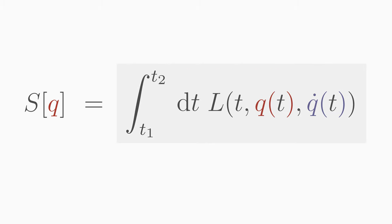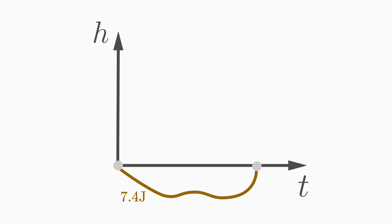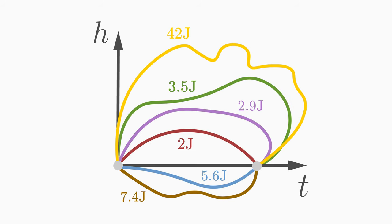Of course, it is totally cumbersome to calculate the integral for all possible paths to take the path that results in the smallest value of the integral. To avoid such a huge task, the so-called Euler-Lagrange equation comes into play.